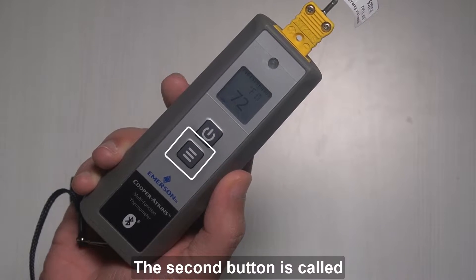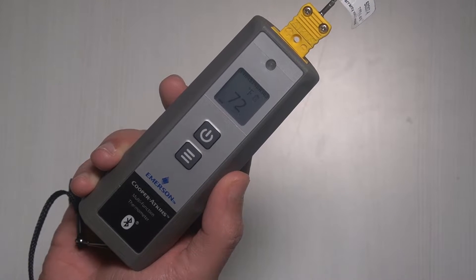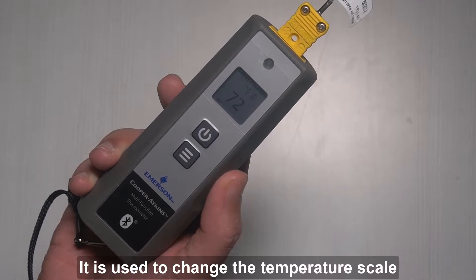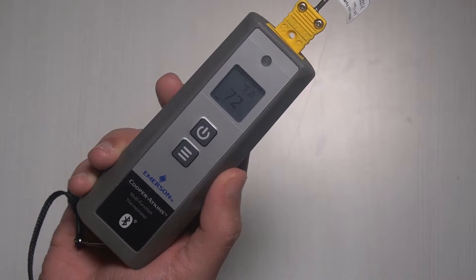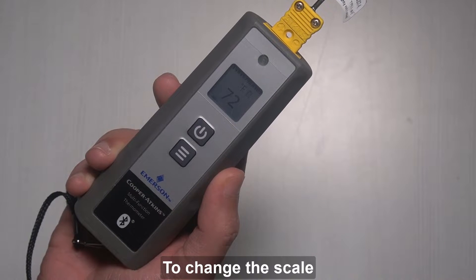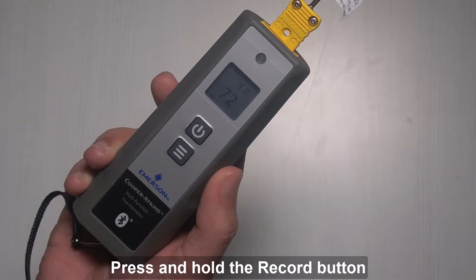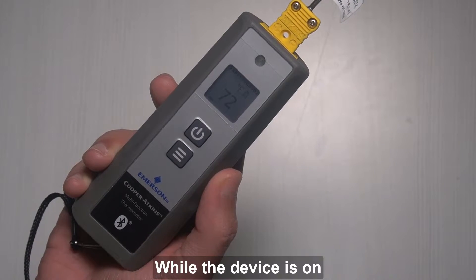The second button is called the record button. It is used to change the temperature scale from Fahrenheit to Celsius and vice versa. To change the scale, press and hold the record button for 3 seconds while the device is on.